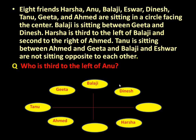Balaji and Ishwar are not sitting opposite to each other. With only one space left for Ishwar that is not opposite Balaji, Ishwar will occupy that position. Only one friend is left — Annu — and only one space remains, so Annu will occupy that position.